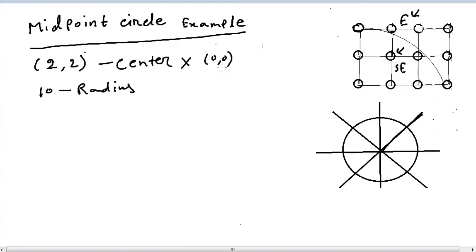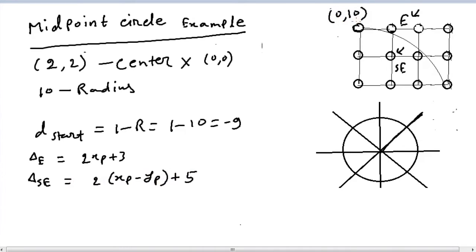Now the radius is 10. As we all know we need the values of d, and if you remember the d start was 1 minus r, which is in this case 1 minus 10 equals minus 9. Our del E equals twice xp plus 3, and our del SE equals 2 into xp minus yp plus 5. Now this is in this case 0, 10.